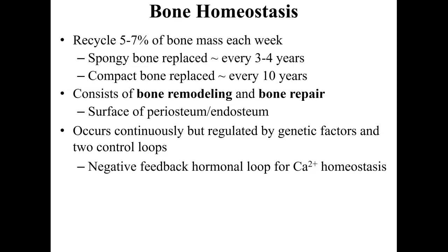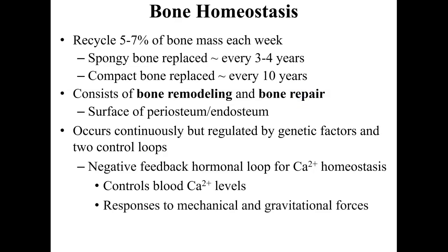If calcium levels are low — calcium being critical for muscle contractions and nerve impulses — the body sends osteoclasts in to eat away at bone, releasing calcium into the bloodstream for use in the nervous system and muscle contractions. That is the negative feedback loop. It also responds to mechanical and gravitational forces, so gravity pulling on the body determines how bone is reshaped.